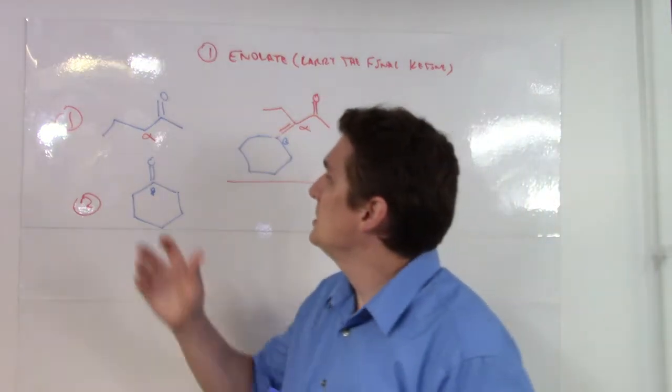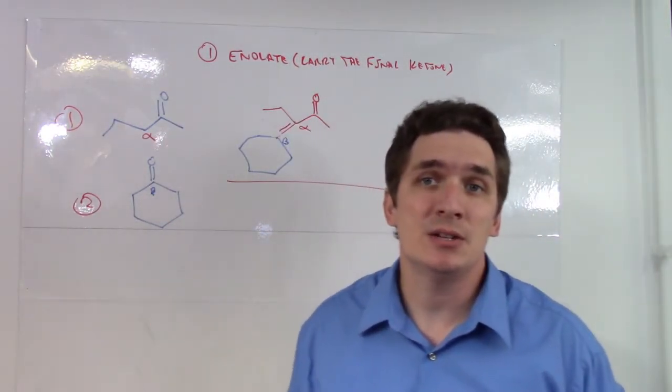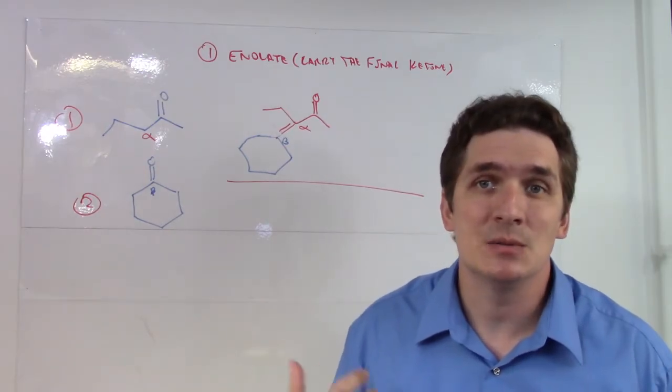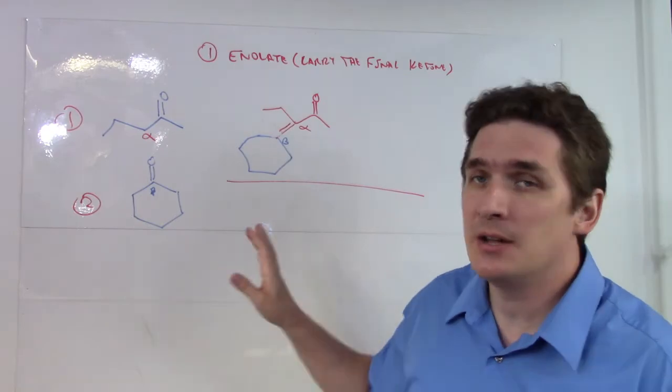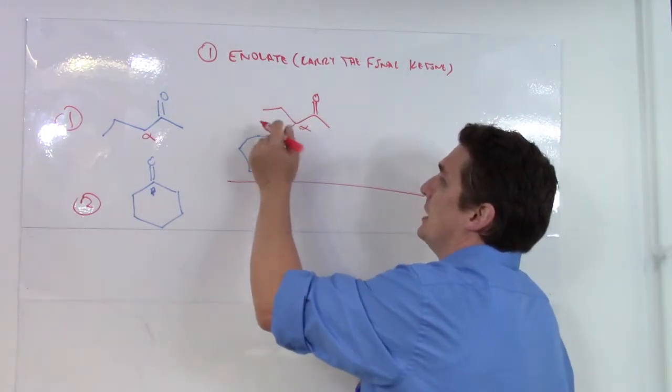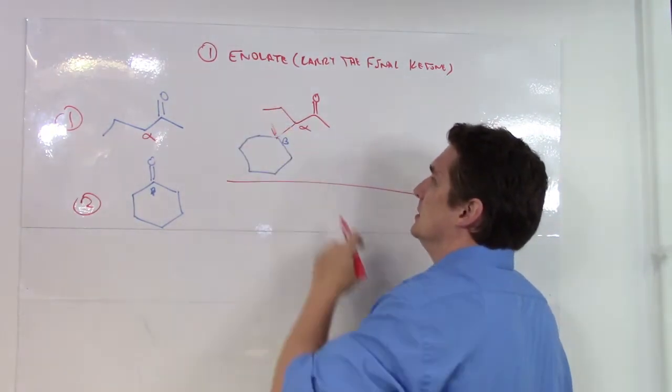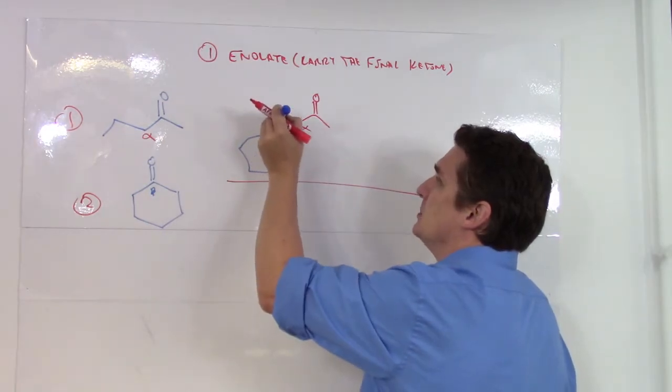Now, how are we going to know which of these alpha carbons we're going to work with because there are two? We're going to start with the more substituted, the most substituted one because that's going to be the more acidic one. So this is going to be one of the products that forms if we do an aldol condensation or if we do an aldol addition.